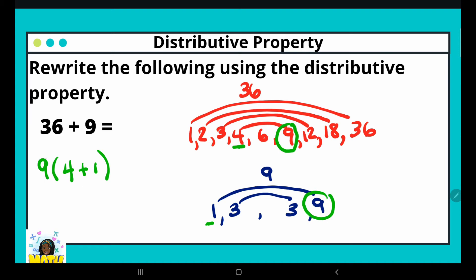So now I've rewritten 36 plus 9 as a product of the GCF and the sum of the factor pairs. 9 was my GCF, and after dividing both numbers, 4 plus 1. If I were to multiply, it would take me right back: 9 times 4 is 36, 9 times 1 is 9, and I can stop right here.